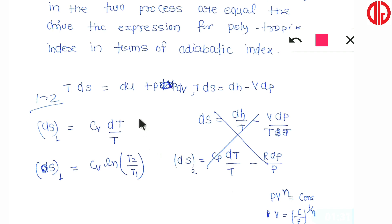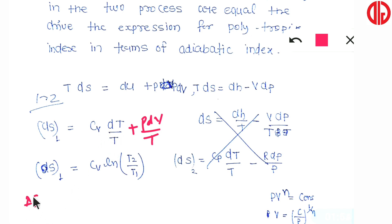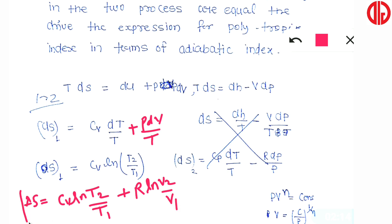To find the entropy change, the formula we use comes from the TDS equation: T·ds = du + p·dv. Dividing by T, we get ds = du/T + p·dv/T. When you integrate this, you get the entropy change formula. If you don't know this formula, it has been derived in the previous theory video. Since volume is constant in process 1→2, dv = 0, so the entropy change from 1 to 2 is: ΔS₁₂ = cv·ln(T2/T1).